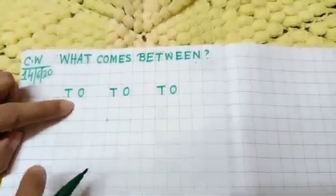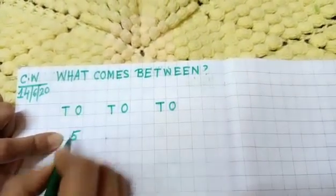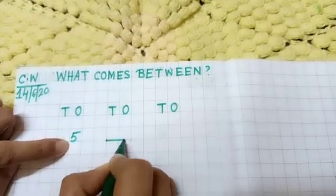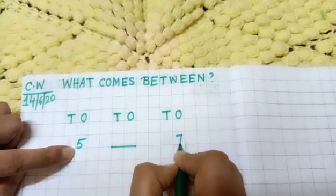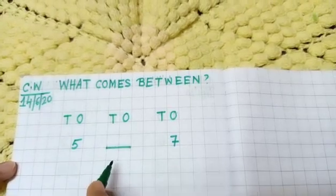Now here you will leave one box and write here five. Number five. Under ones you will write here number five. Then give one slipping line. And here you will write seven. So you have to do it by yourself. Ok children.